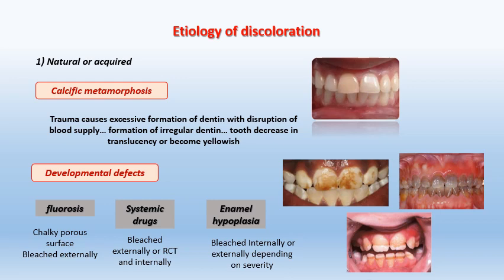The third type is enamel hypoplasia, which appears usually as a brownish or whitish area on the labial aspect of the crown and differs from hypocalcification. In enamel hypoplasia there is a defect in the organic structure of the tooth; the enamel becomes defective and porous, easily taking up stains from the oral cavity. Depending on the severity, I may determine whether the tooth needs internal bleaching with root canal treatment or only external bleaching.